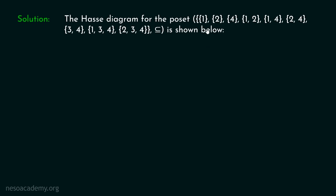Let's draw the Hasse Diagram for this particular poset. The set is available with us and the relation is defined on the set. This relation is a partial order — you can verify this. We are available with these three elements in this set; these three are sets. The relation is a subset relation. We can place these three sets at the bottommost place in the Hasse Diagram, as no element is related to these elements.